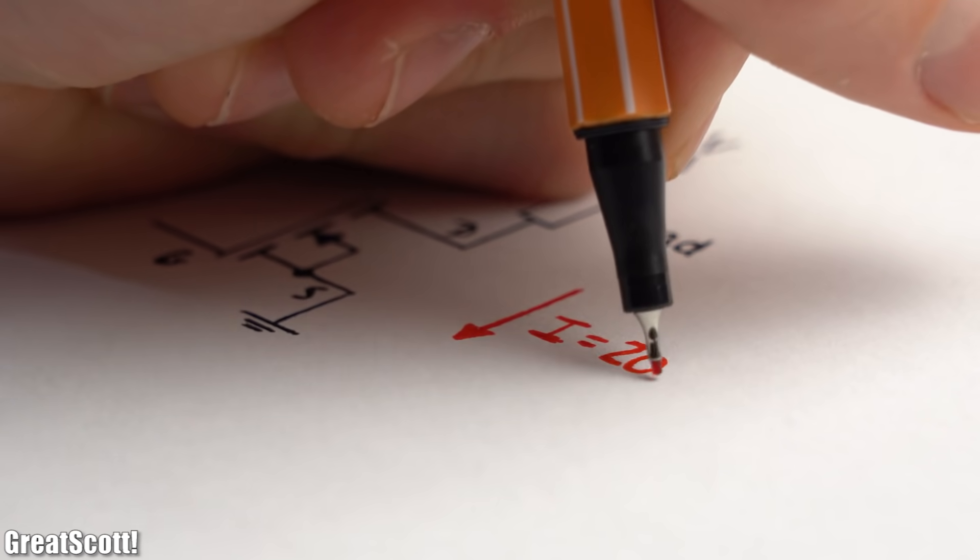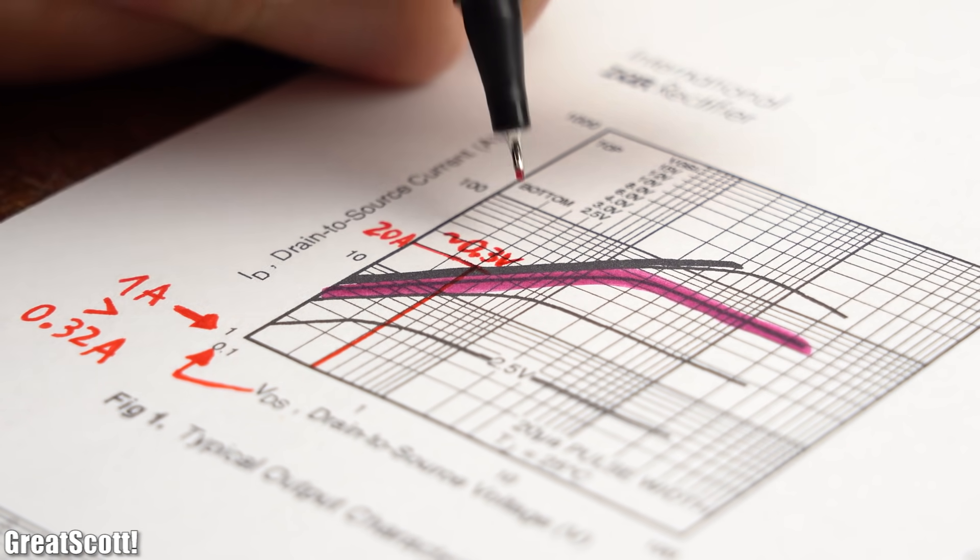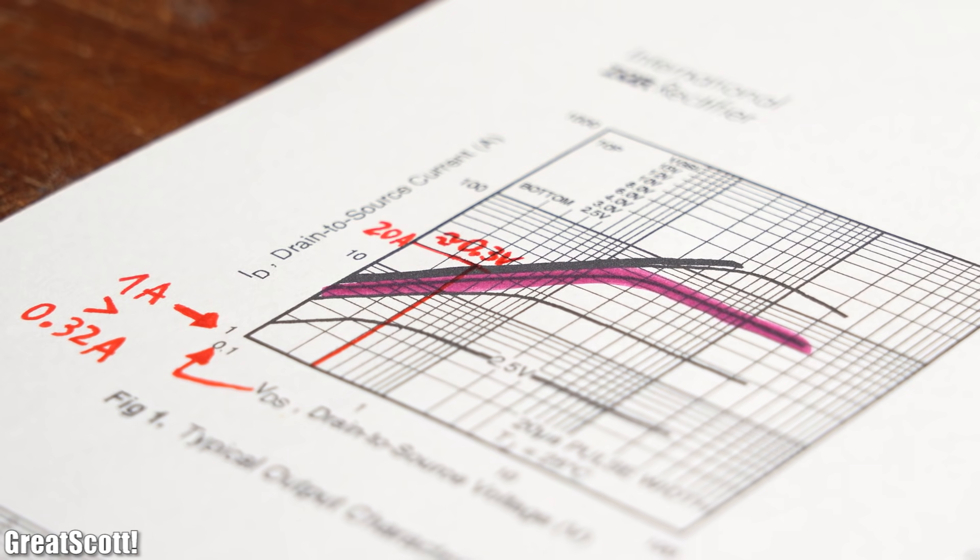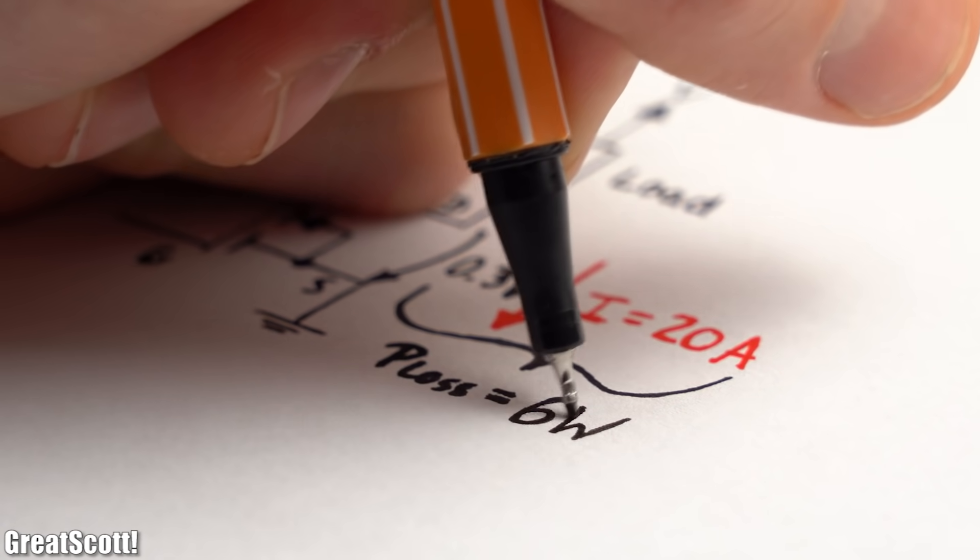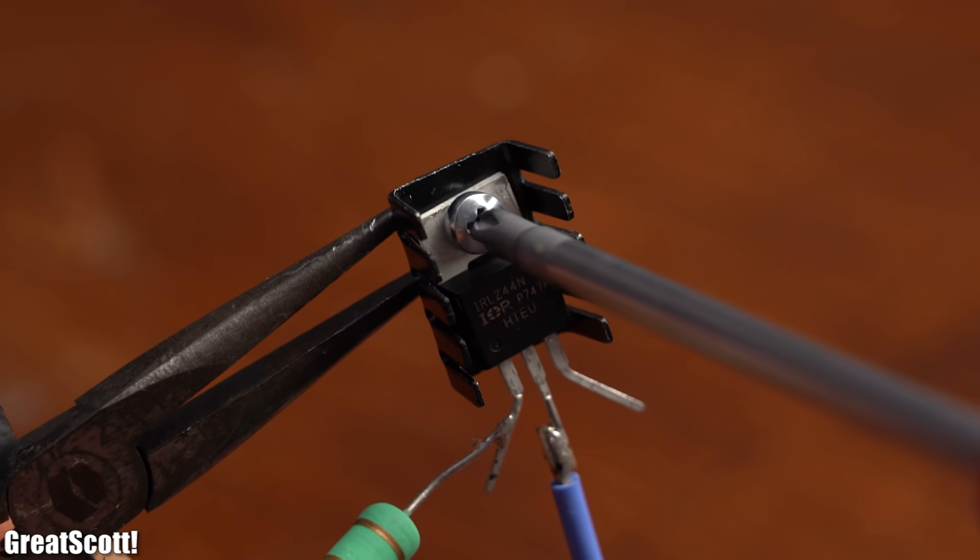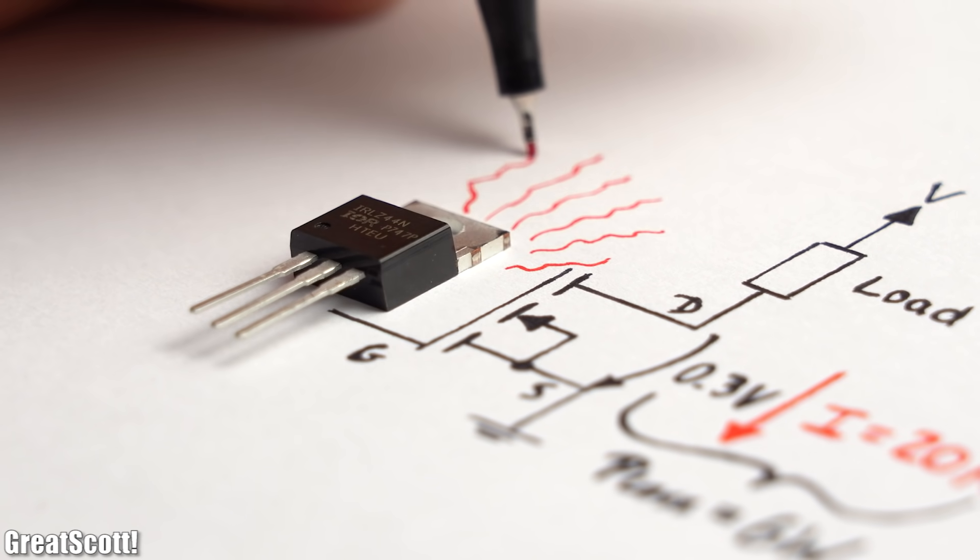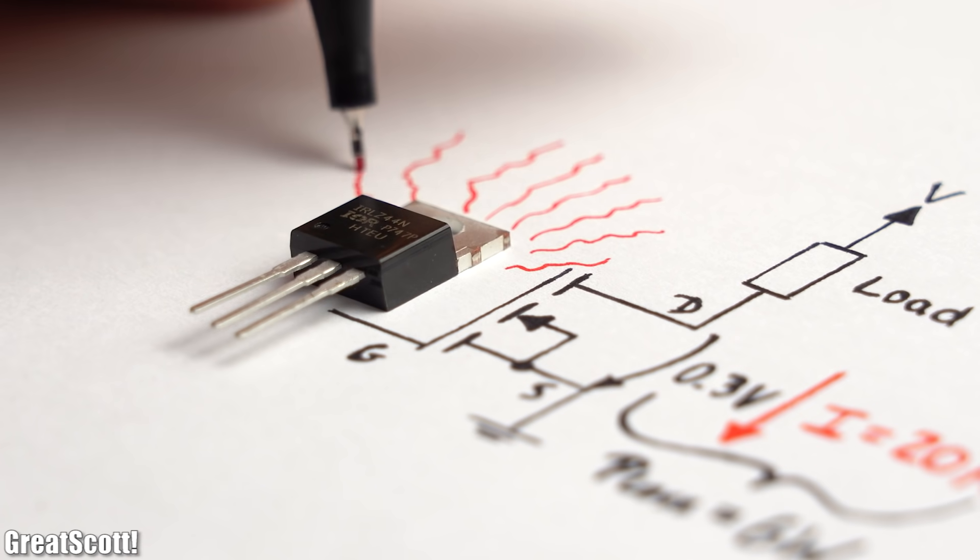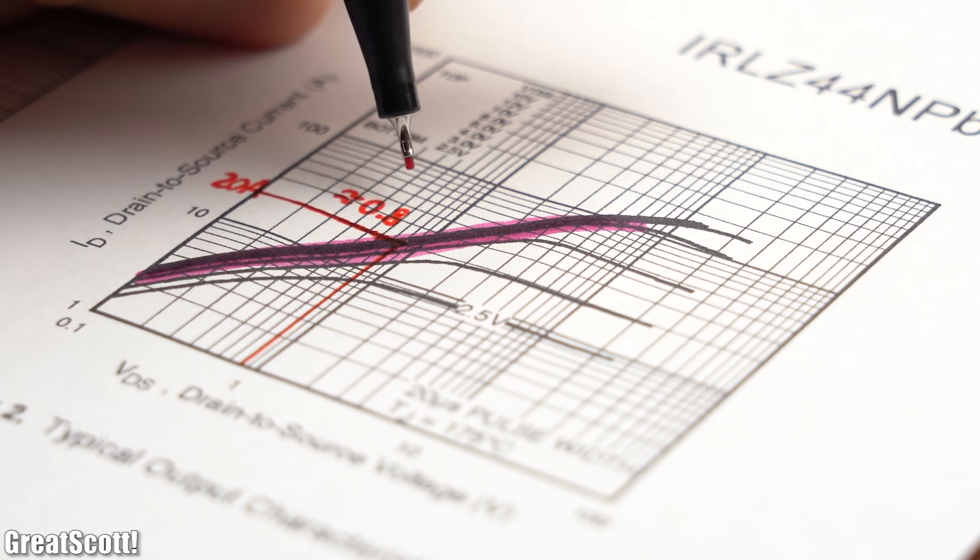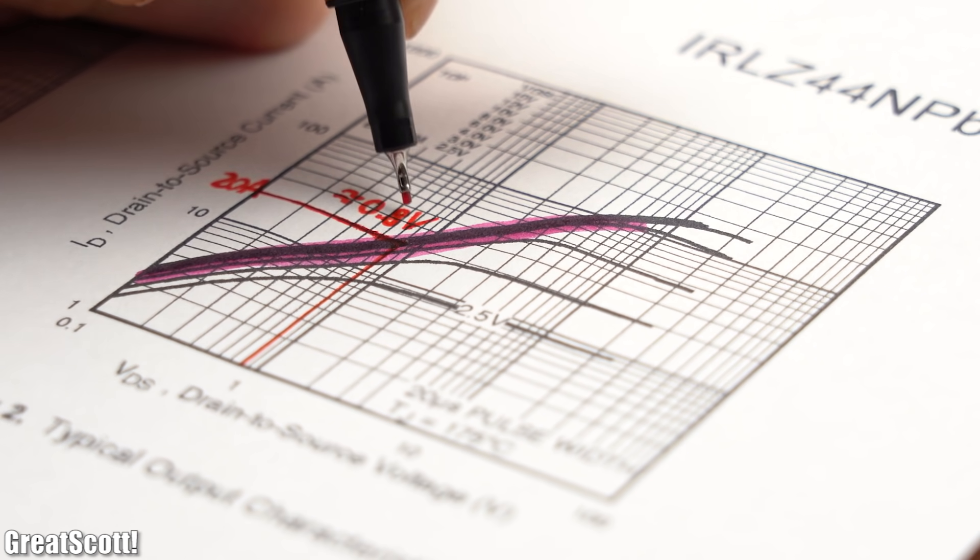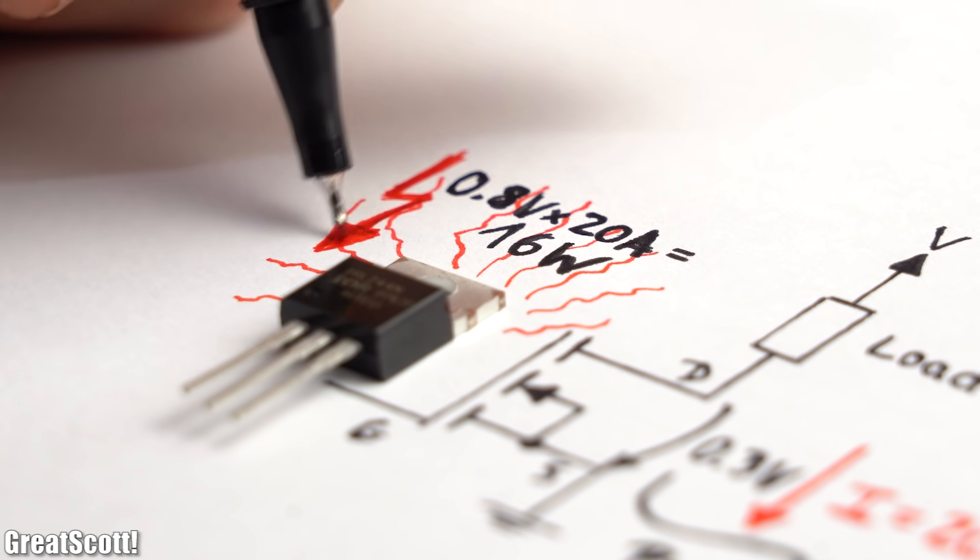It is noteworthy that if my load would draw a current of for example 20A, then the drain-source voltage would according to the graph of the datasheet rise to 0.3V. This might only be a rather small voltage drop but due to the 20A it creates a power loss of 6W which needs to get dissipated as heat through a heatsink. If that does not happen correctly, then the temperature of the MOSFET can for example increase to a value of 175 degree Celsius, which means that according to the next graph the drain-source voltage increases to 0.8V, which makes the whole situation even worse and can lead to the destruction of the MOSFET.